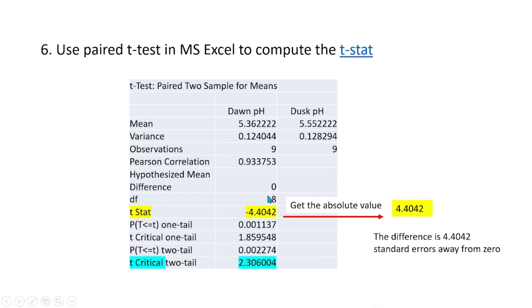Also, our degree of freedom here is 8. Also, the t-critical two-tail value is 2.3060. These values are the same as our previous calculations. We are interested in the t-statistic value in this table, which is minus 4.4042. All we need to do is get its absolute value which is 4.4042. This value means that the difference is 4.4042 standard error away from 0.